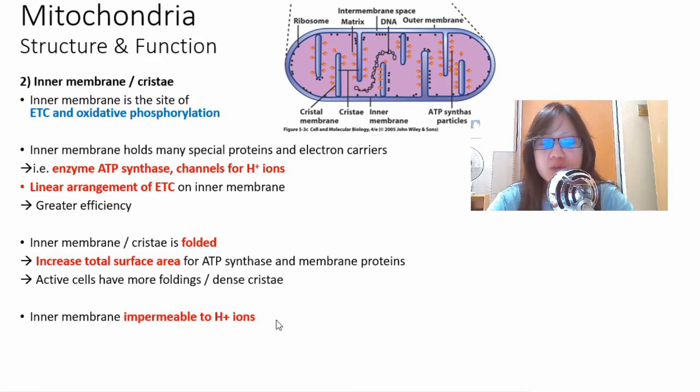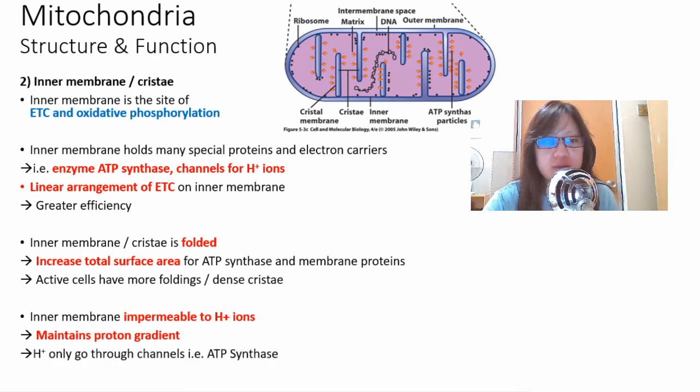The inner membrane, usually membranes can be a little bit permeable to ions because H plus ions in particular are very small, but this inner membrane is very closely packed and impermeable to H plus ions. This helps maintain the proton gradient so that the H plus ions only go through channels, i.e. ATP synthase.